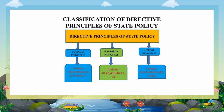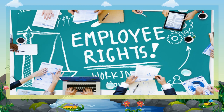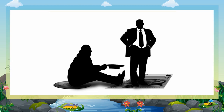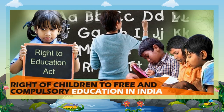The Constitution provides the following directive principles: One, the government should provide proper living conditions for all citizens. Two, the government should provide work for everyone. Three, the government should ensure that some people do not become rich by exploiting others. Four, the government should improve the conditions of weaker sections of society, such as those belonging to the Scheduled Castes and Scheduled Tribes. Five, the government should provide free and compulsory education for children up to the age of 14 years.